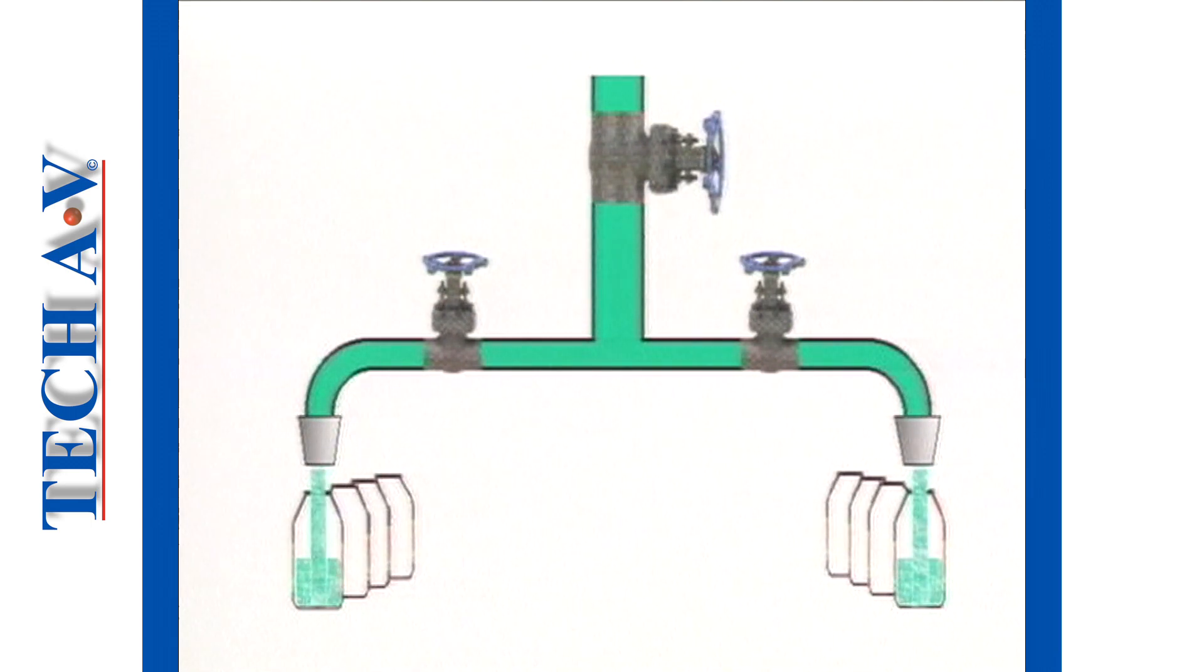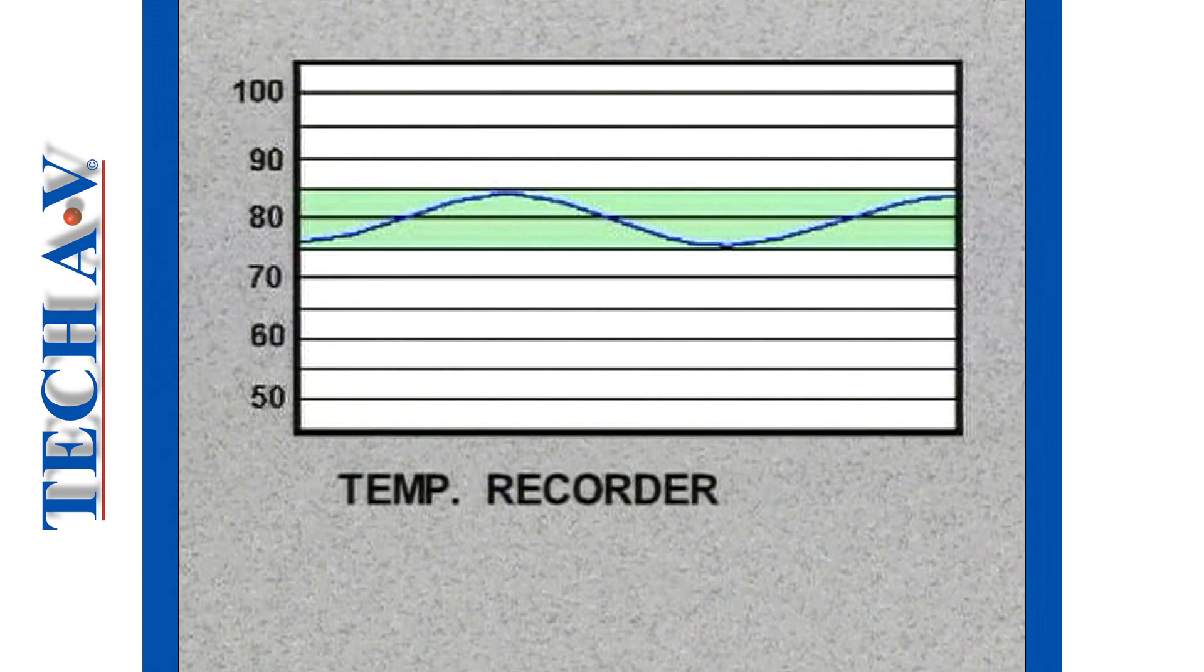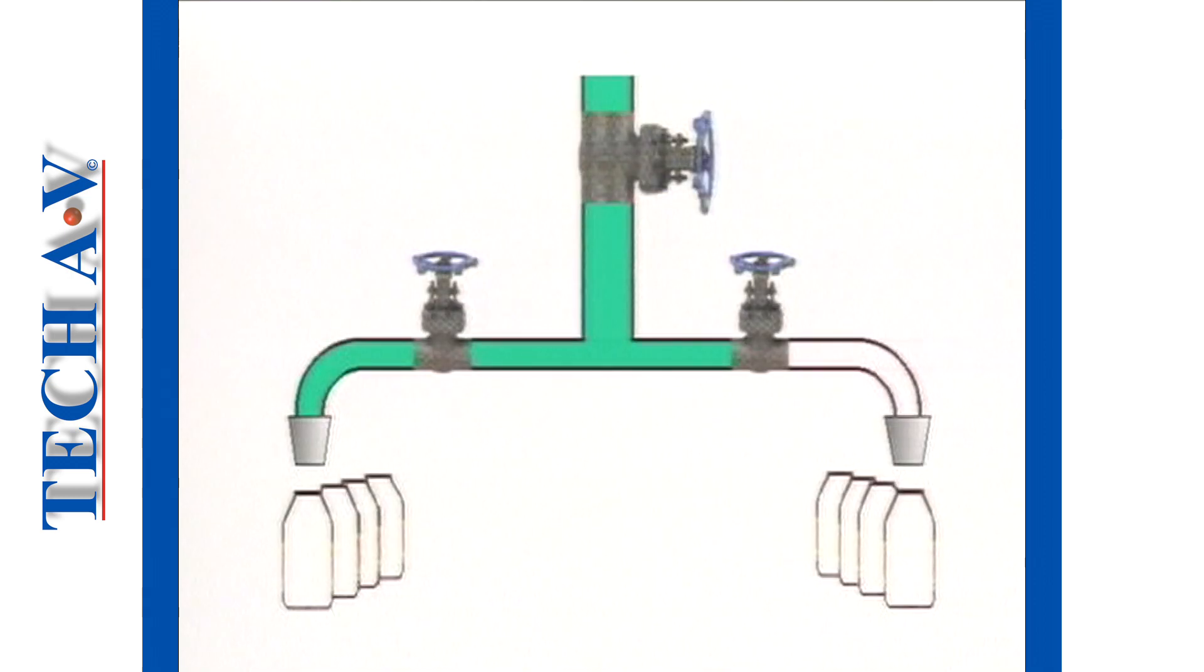If you recall, the new continuous process is designed to operate two bottling lines, but something happens whenever one line is stopped, or when the second line is started, for example, after maintenance. Remember that our blending temperature variance, or error, can be no more than 5 degrees, either side of 80 degrees.